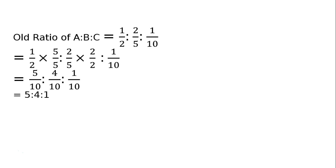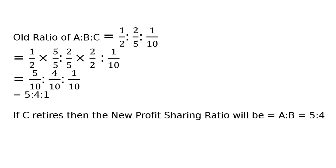C retired, his share will go out. Therefore, if C retires, then the new ratio for A:B will be 5:4, and the 1 will go away.